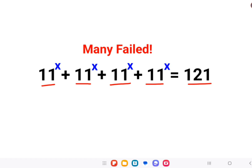First step, let's try and simplify things as much as possible. There are four 11^x terms, so I can write this as 11^x × 4 = 121.